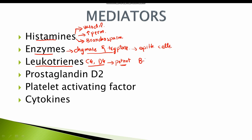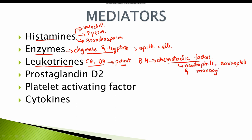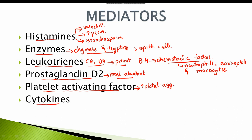B4 leukotrienes act as chemotactic factors for neutrophils, eosinophils, and monocytes. Prostaglandin D2 is the most abundant mediator produced by the mast cells and also results in vasodilation, increased permeability of blood vessels, bronchospasm, and increased mucous secretion from epithelial cells. Platelet activating factor is also released from the mast cells, which in addition to the effects of histamines, also increases platelet aggregation. Cytokines produced by the mast cells include interleukin-1, tissue necrosis factor, and certain chemokines. All these mediators together produce type 1 hypersensitivity reaction.